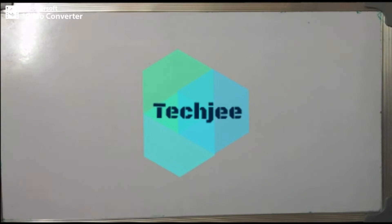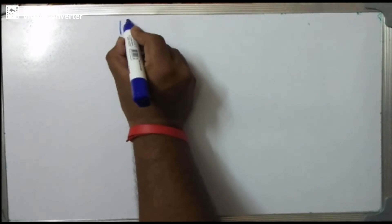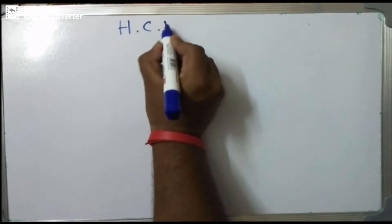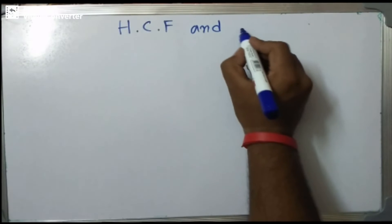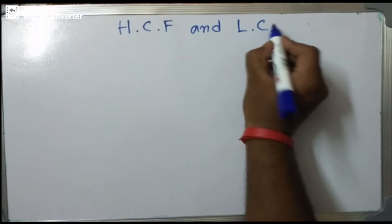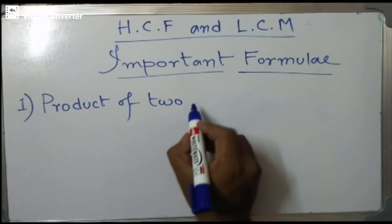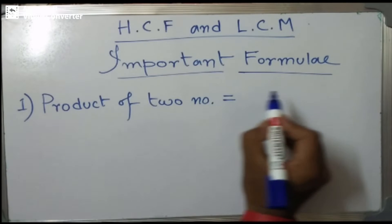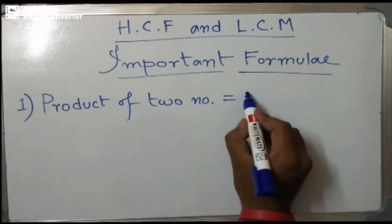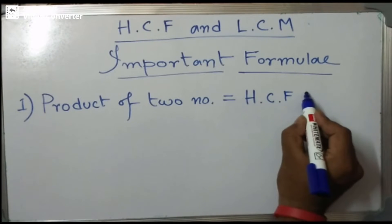Let's start. First we discuss HCF and LCM. We all know how to perform HCF and LCM operations. Before starting, we have to remember a few important formulas — please write down all these formulas as we will use them in our problems. The first formula is: product of two numbers equals HCF multiplied by LCM. This formula is very important and we will use it many times.